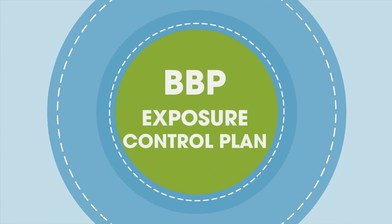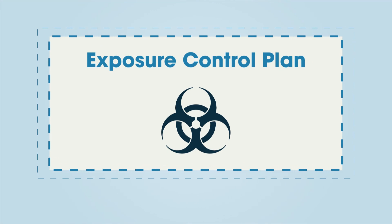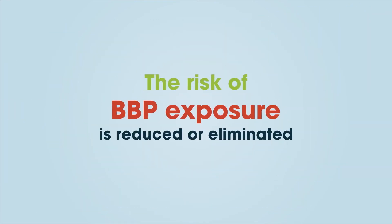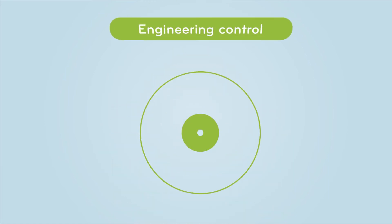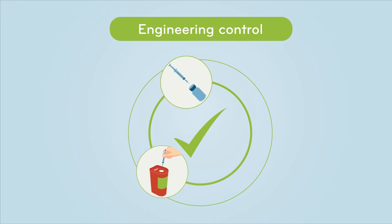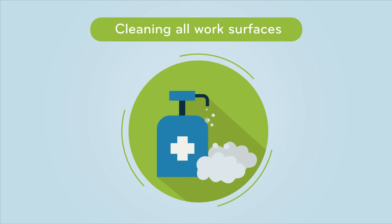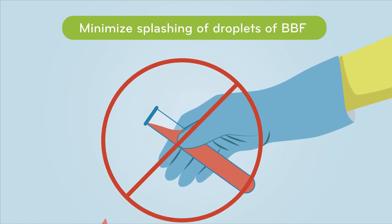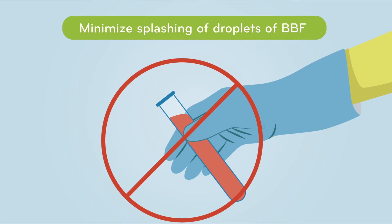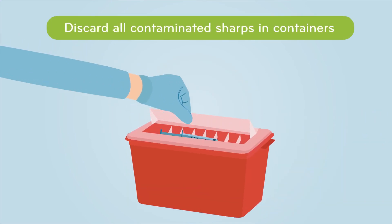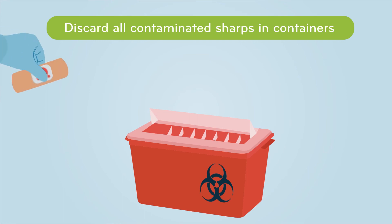Bloodborne Pathogen — BBP Exposure Control Plan. The purpose of the Bloodborne Pathogen Exposure Control Plan is to reduce or eliminate occupational exposures. The risk is reduced by using standard precautions, engineering controls such as sharps units, needless systems, and self-sheathing needles, and PPE. Additionally: clean all work surfaces after contamination using an appropriate disinfectant; minimize splashing and splattering of blood or infectious material; place all specimens in properly labeled containers; and discard all contaminated sharps immediately in containers that are closable, puncture-resistant, leak-proof, and appropriately labeled.